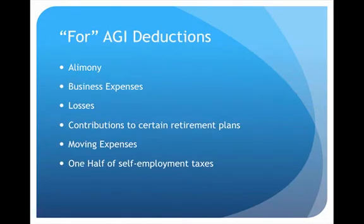What are the major for AGI deductions? First, alimony — any alimony that a person pays they get to deduct. The person who received the alimony has to report it as income, but payment of alimony is always a for AGI deduction. Also, business expenses: if the person has a business, the expenses of that business are a for AGI deduction. Additionally, losses — business losses or losses on the sale of property — are also deductible.